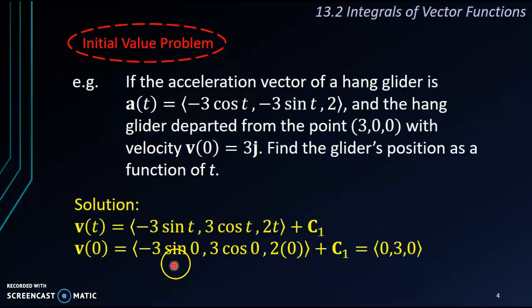So let's calculate. -3 multiplied with sin 0. Sin 0 is 0. Cos 0 is 1. So here we'll get 0, here we'll get 3, and here we'll get 0. We get (0, 3, 0). (0, 3, 0) plus C₁ is equal to (0, 3, 0) from the question here.